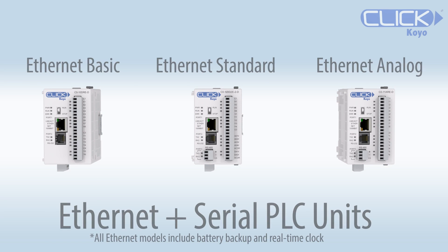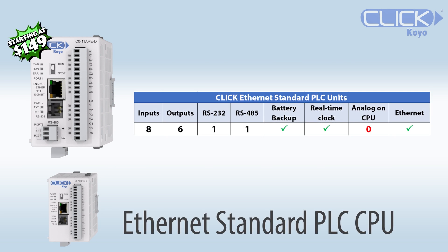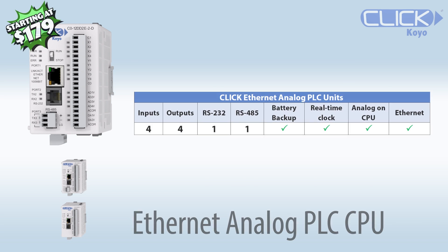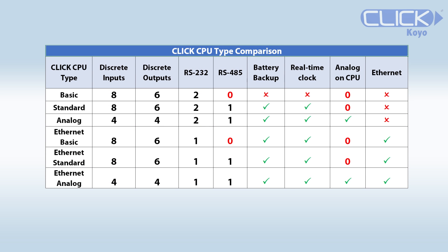The rest of the Qlik CPUs all have Ethernet and Serial in some combination, and all units have battery backup and real-time clock. The Basic Ethernet CPU has the Ethernet port plus one RS-232 port. The Ethernet Standard adds the RS-485 port. The Analog Ethernet also has an RS-485 port and analog inputs and outputs in different configurations. This provides a quick comparison of each CPU type's features.